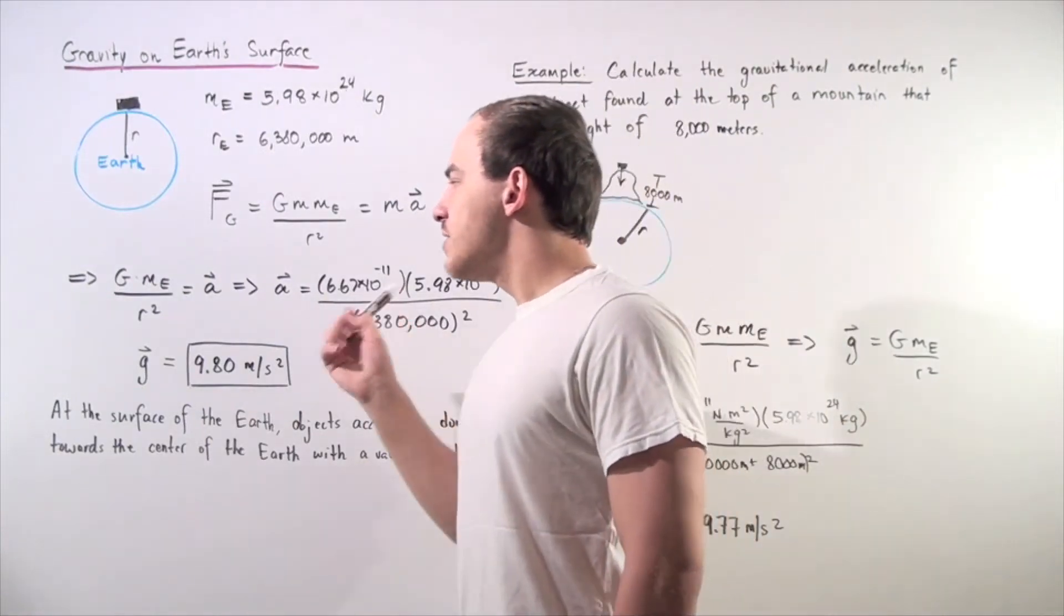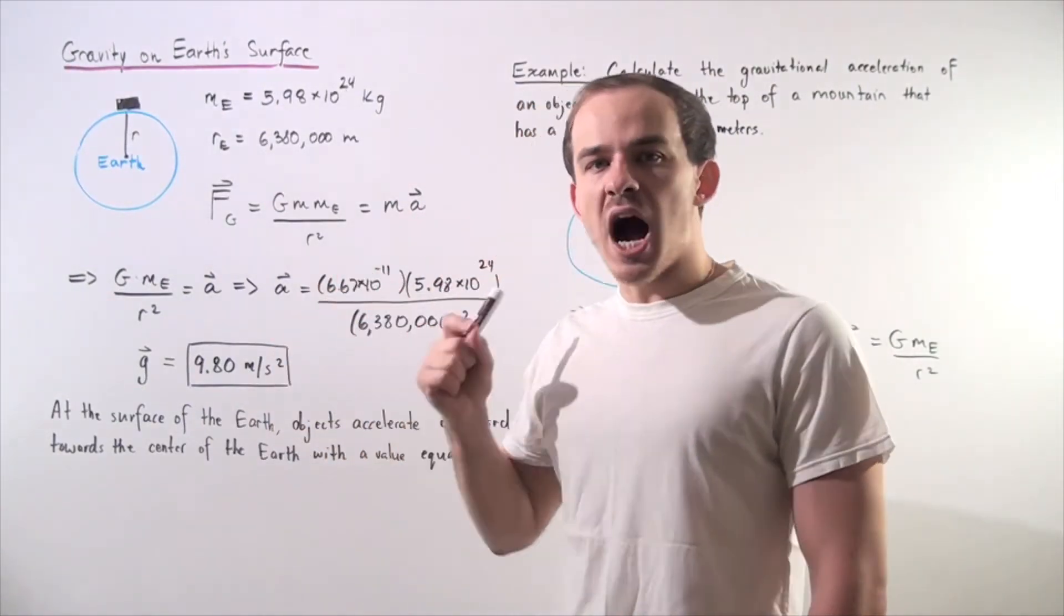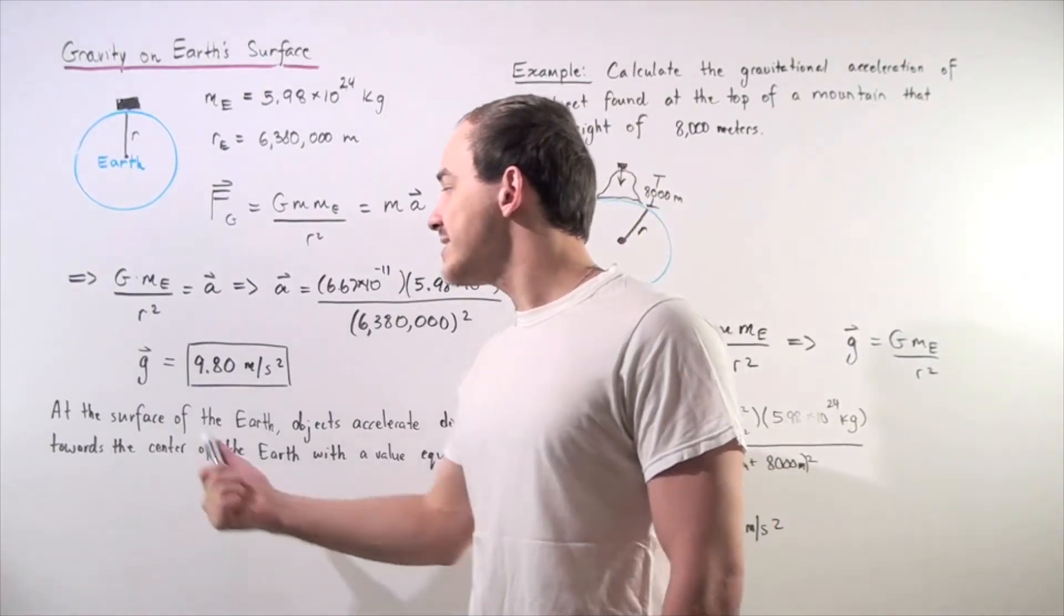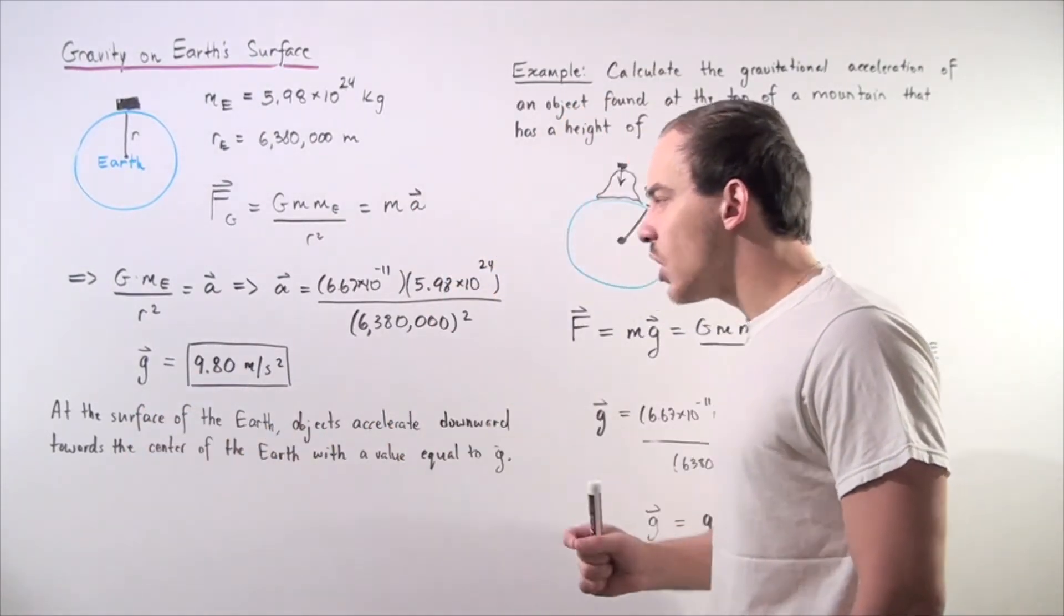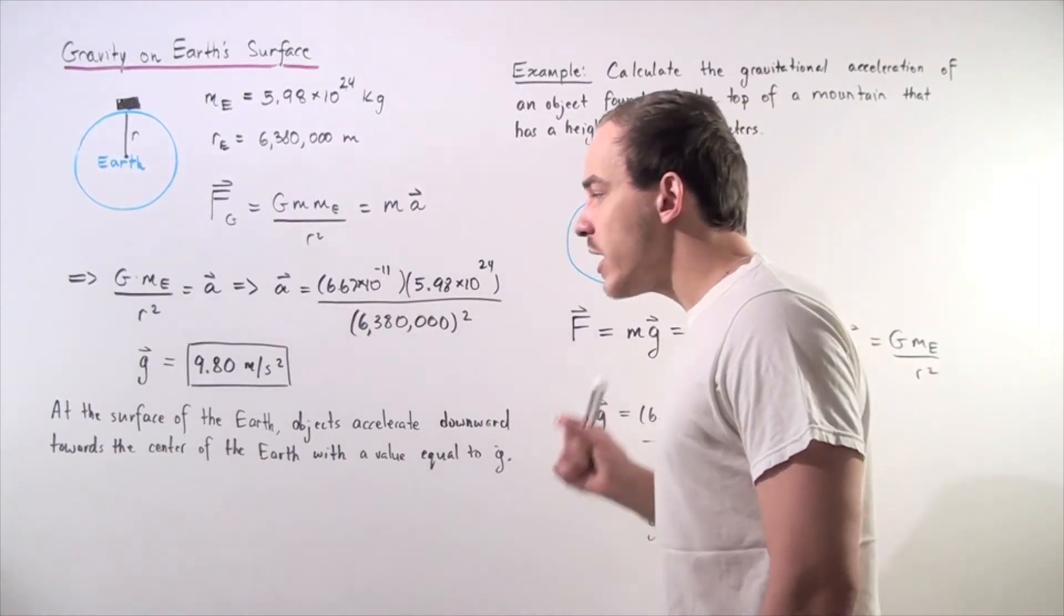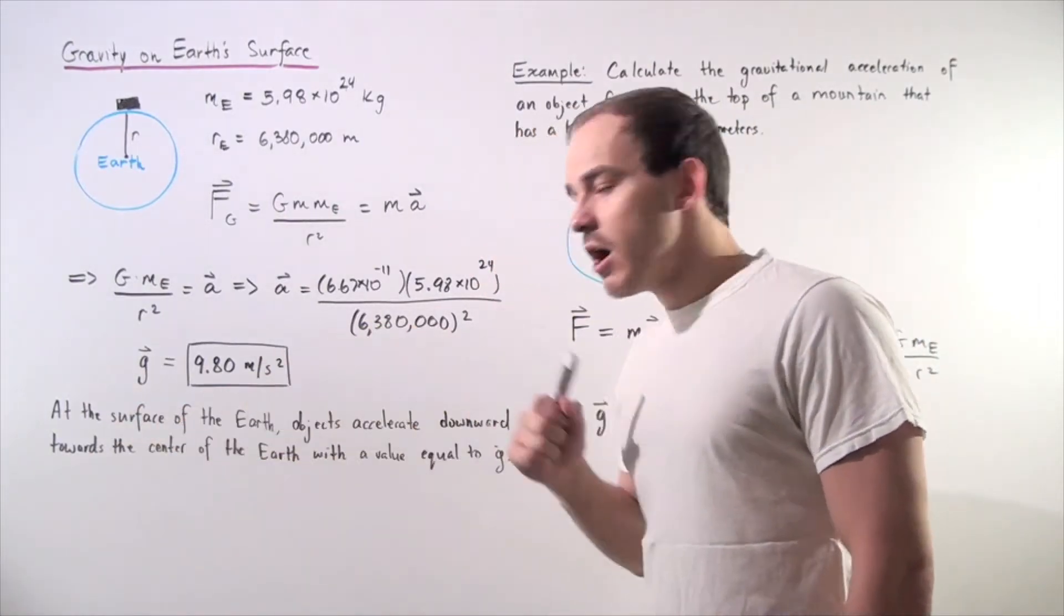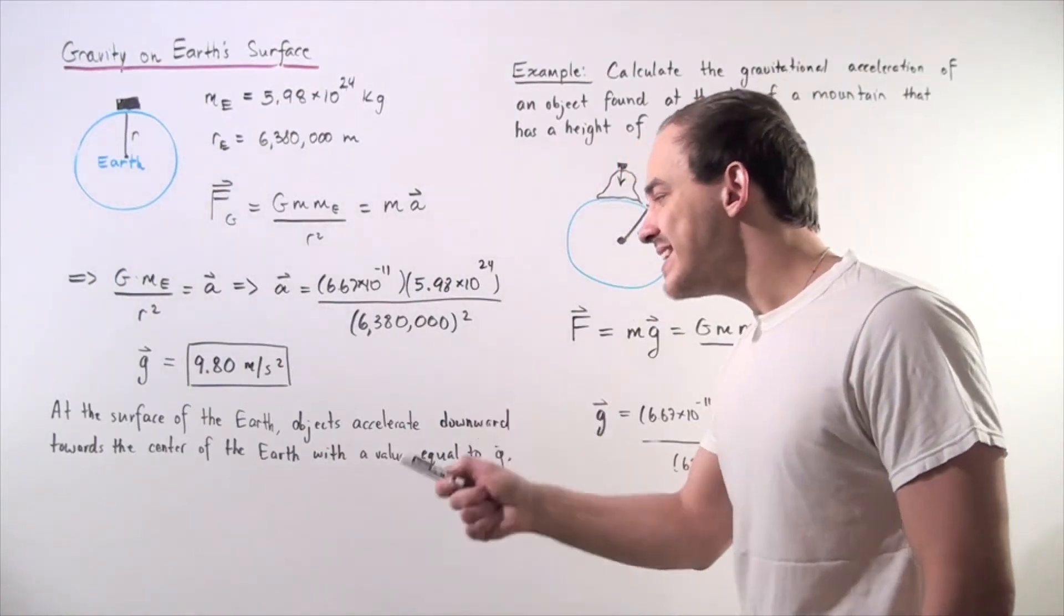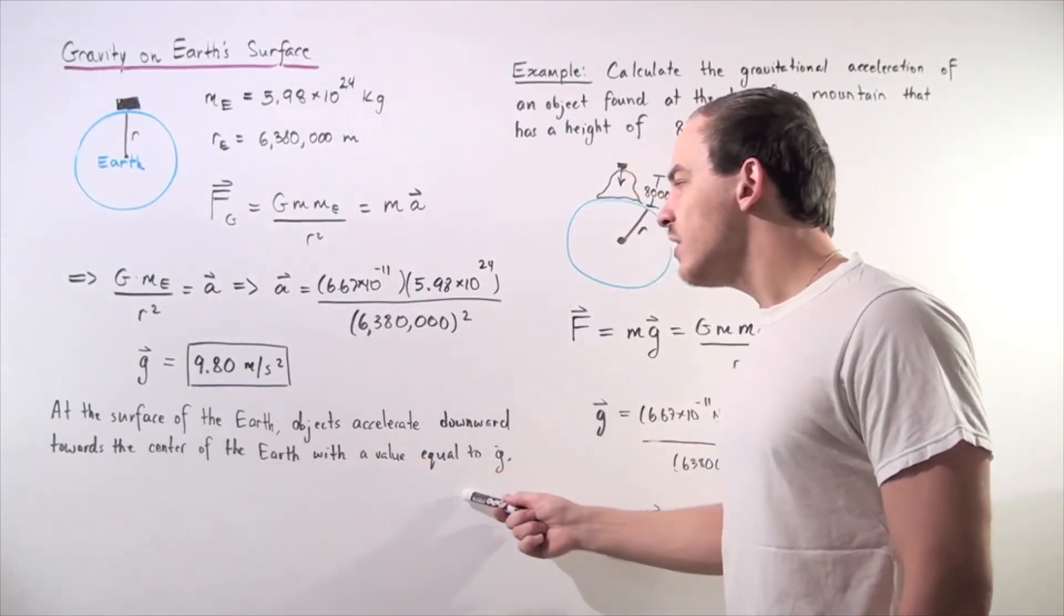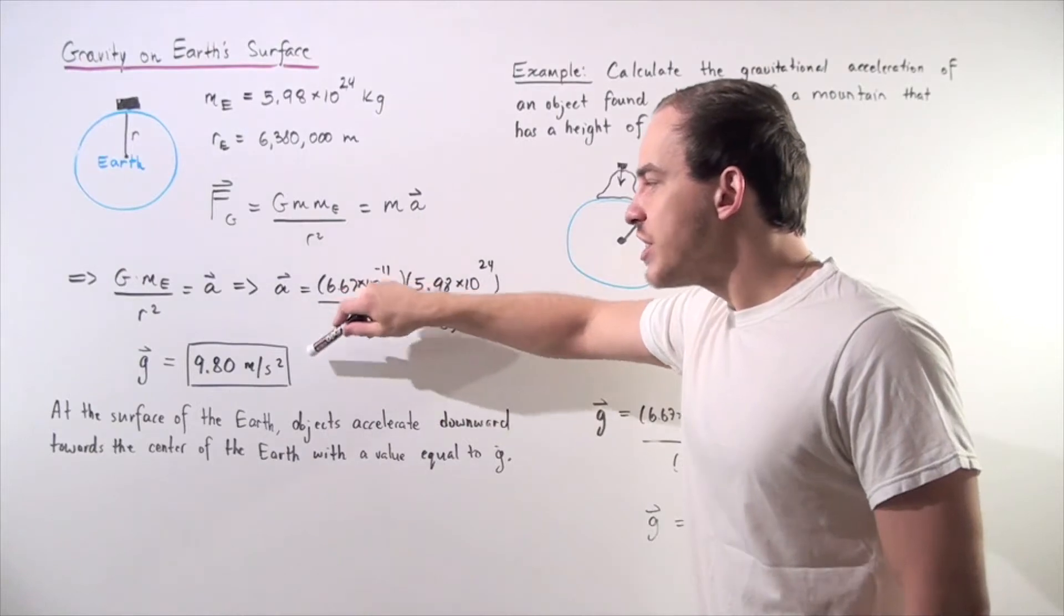and we get that our acceleration of the object, which is commonly known as simply g, is equal to 9.80 meters per second squared. So, at the surface of the Earth, objects accelerate downward towards the center of the Earth with a value that equals to this g.